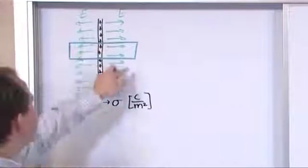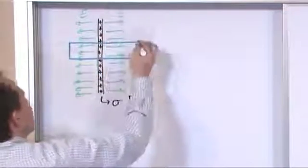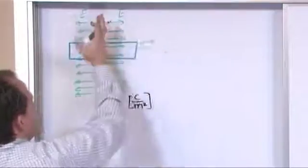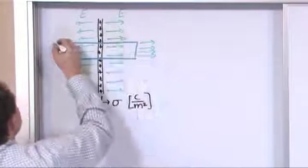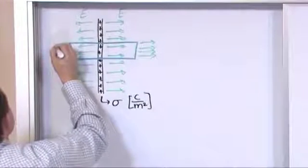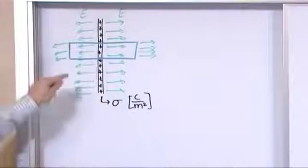But because it's a uniform field, the electric field extending out everywhere goes right perpendicular through this end and also perpendicular right through that end. So it's easy to count.